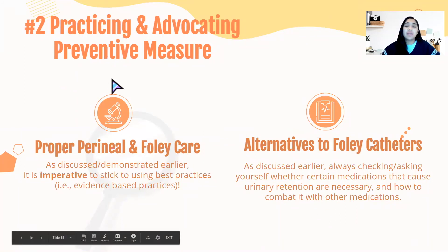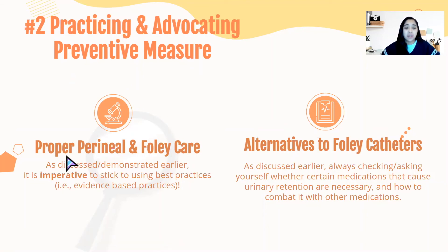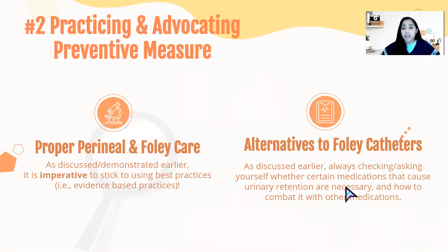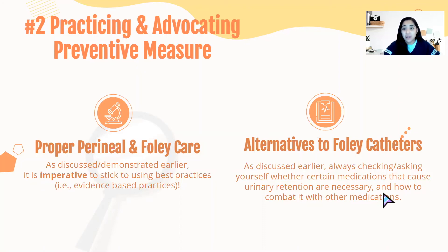The second thing nurses can do is practice and advocate preventive measures. It is imperative to perform proper perineal and Foley care. We should always check for alternatives to Foley catheters, and if the patient is on medications that cause urinary retention, we want to see if those can be discontinued. We should continually be asking ourselves whether or not the Foley is still necessary for the patient — it may have been needed at the beginning of care, but perhaps not anymore.